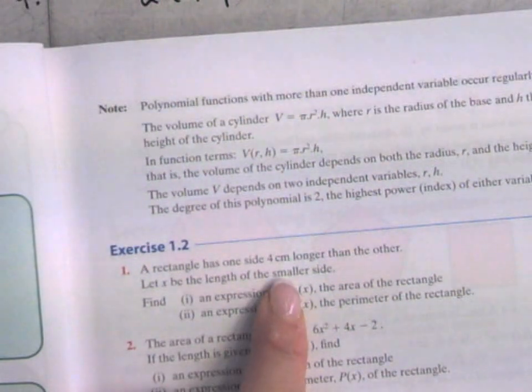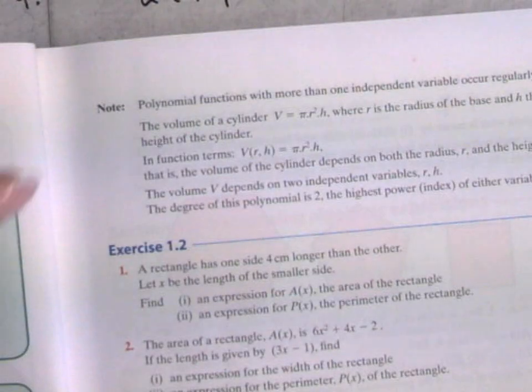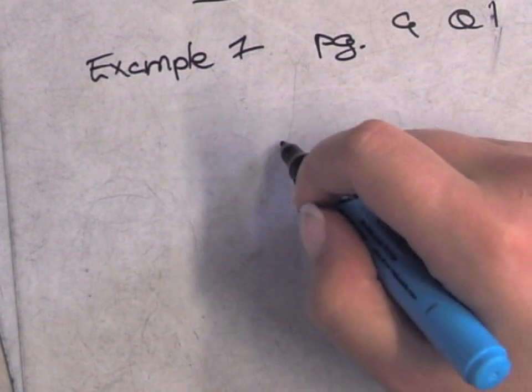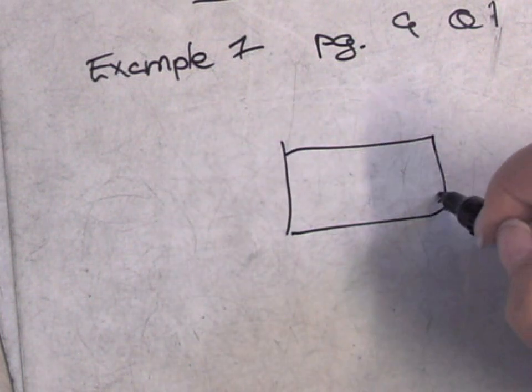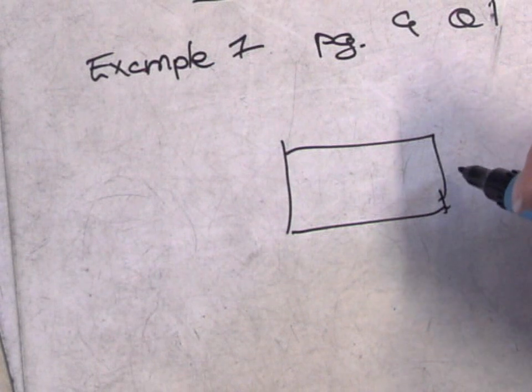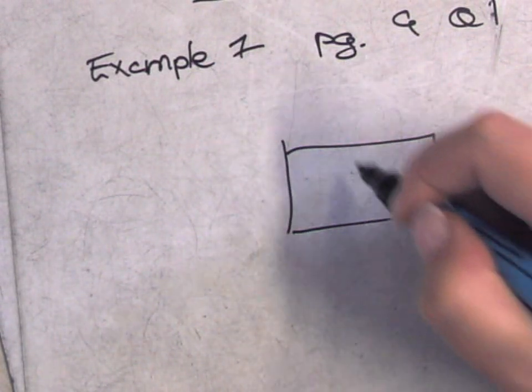Okay, so question 1, here it is, you can read it. A rectangle has one side four centimeters longer than the other. So let's draw, I'm going to draw my rectangle. And it says one side is four centimeters longer than the other. So if I call the short side x, and the other side is four centimeters longer, x plus four or four plus x.